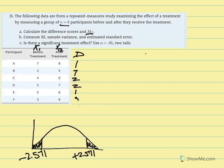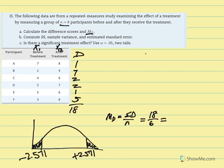Now we can calculate our mean difference. The mean difference is equal to the sum of D over N. Summing the D scores: 1 plus 7 is 8, plus 2 is 10, plus 2 is 12, plus 1 is 13, plus 5 gives us 18. So the sum of D equals 18, and 18 divided by our sample size of 6 gives us a mean difference equal to 3.